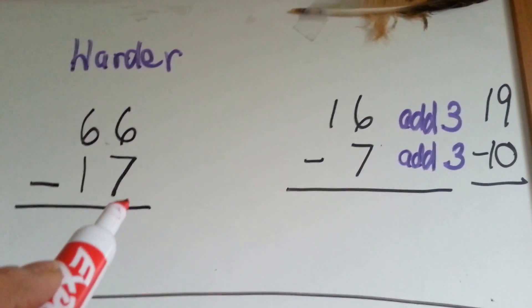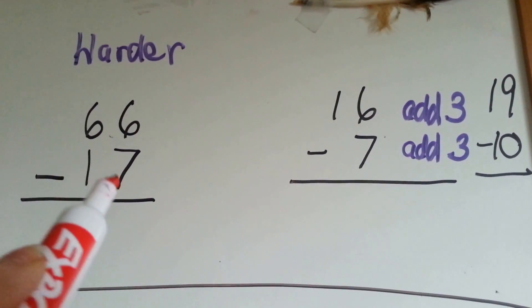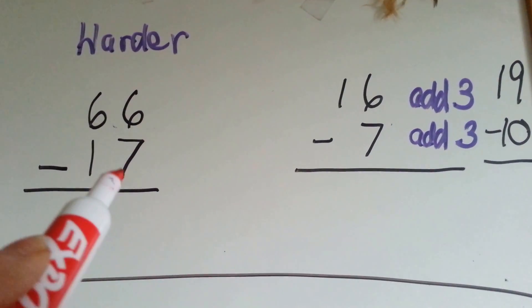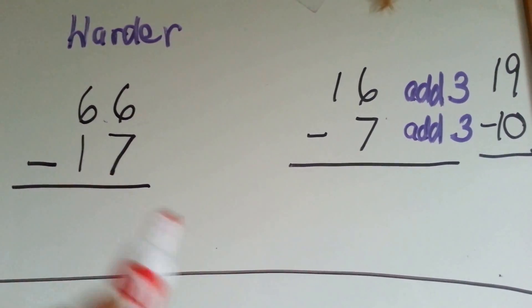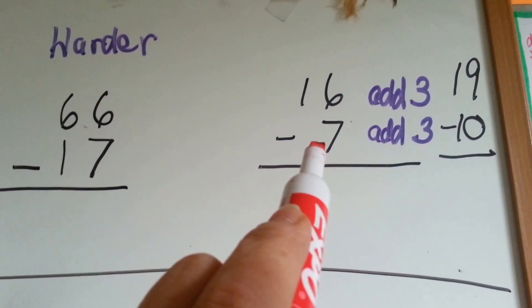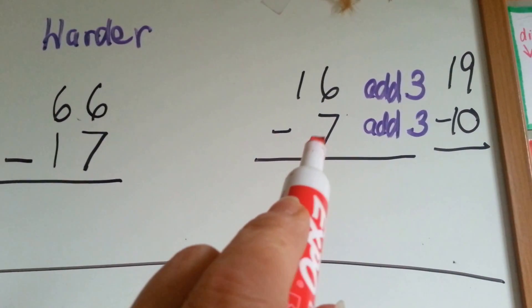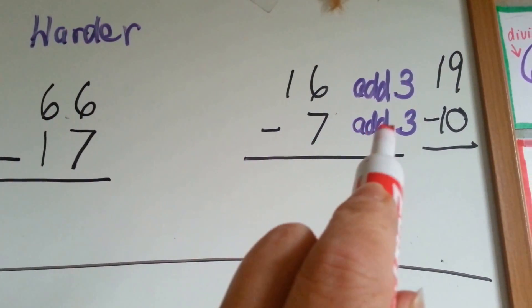What we do is we ask ourselves, what does the 17 need to be an easier number like 20? So let's do it with this one. 16 minus 7. What does 7 need to be an easier number like 10? You need to add 3.